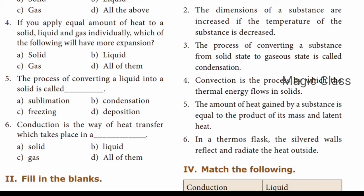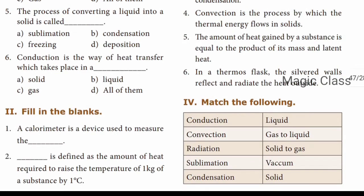Question number five: The amount of heat gained by a substance is equal to the product of its mass and latent heat - this is true. Question number six: In a thermos flask, the silvered wall reflects and radiates the heat outside - when silver is used in a thermos flask, heat cannot escape, so the answer is false.